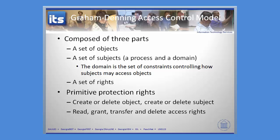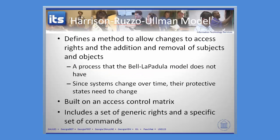Now we're going to move over and look at Harrison. Harrison built on Bell, and the idea here is to provide some method to allow changes to access rights and the addition and removal of subjects and objects — so it was an extension of the Bell model. It used an access control matrix with generic rights and a generic set of commands. So we took something old, added something to it, and renamed it with a much longer title.